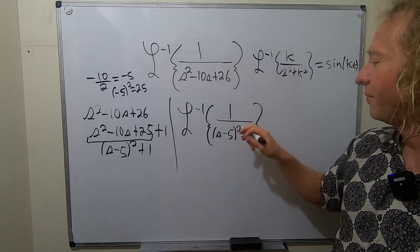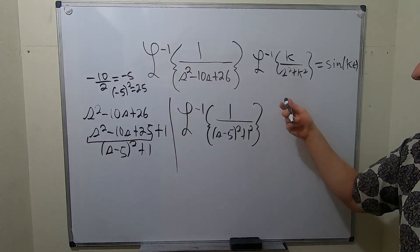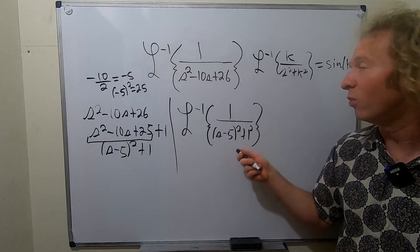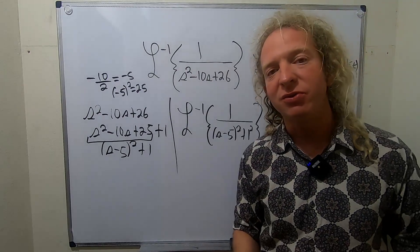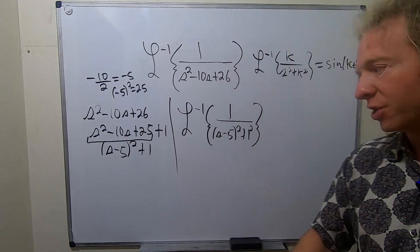So here, this is almost that. k is 1. Except we have s minus 5. We want an s. So what we do is now we use the first translation theorem, and we do a shift.